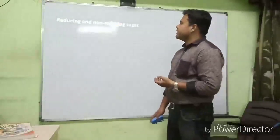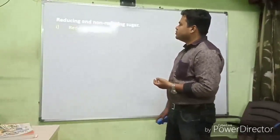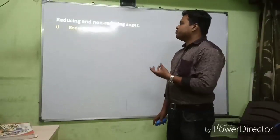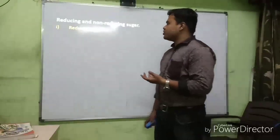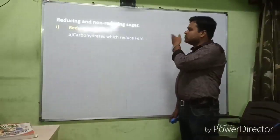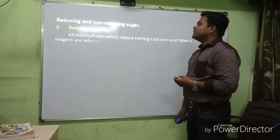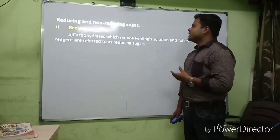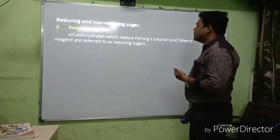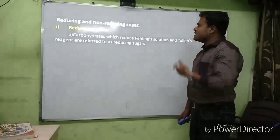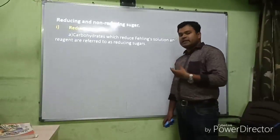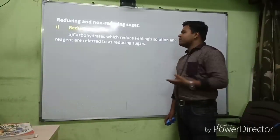Next: reducing and non-reducing sugars. Carbohydrates which reduce Fehling's solution and Tollens' reagent are referred to as reducing sugars. In the topic of aldehydes, ketones, and carboxylic acids, we learn about Fehling's solution and Tollens' reagent as simple tests for the presence of an aldehyde group.